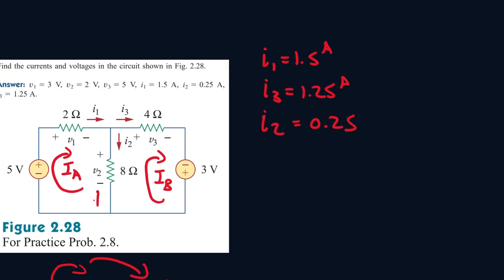Okay, now let's find the voltages. So we know that V equals IR. So V1 will equal to I1, which is 1.5, times the 2 ohm resistor, which gives us 3 volts.